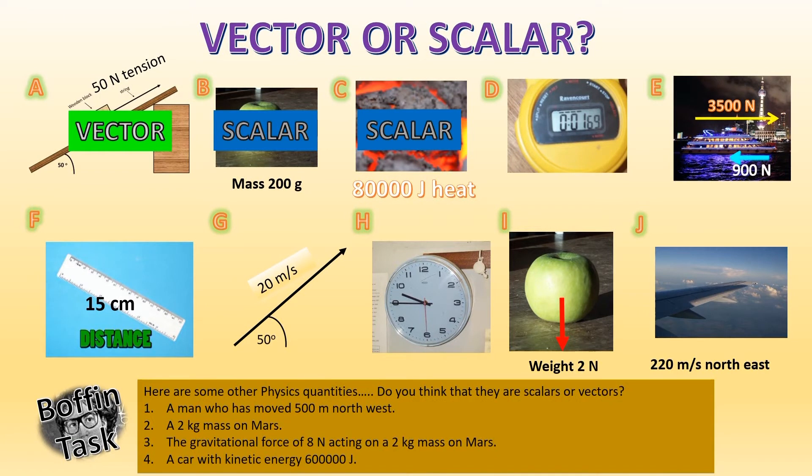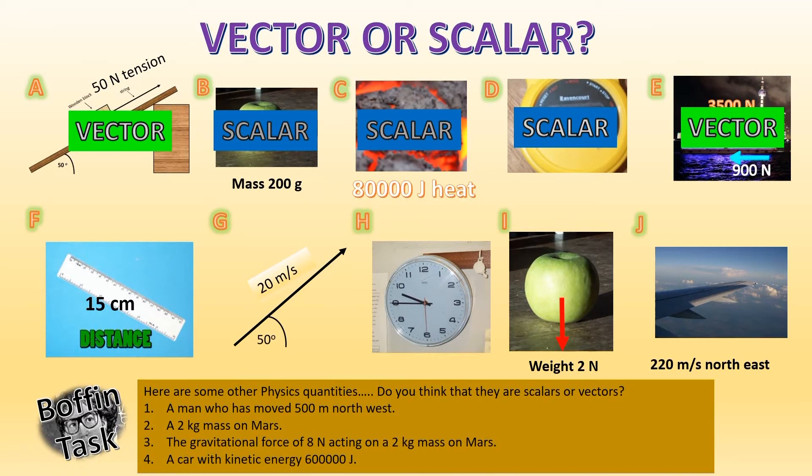And here we have some forces. We've got some arrows. Arrows are a clue. It's newtons, so that's a double clue. Yep, it's got to be vectors. We're talking about forces. Here, I've given a distance. I'm not giving any particular direction, it's just a plain old distance, just a magnitude. Therefore, it has to be a scalar. Oh look, an arrow, meters per second, but it's clearly got a direction. It's an arrow, so that means it's got to be a vector. Oh look, another clock. I don't know why I've done this, but yeah, it's time again. Time is definitely a scalar. Time does not have a direction.